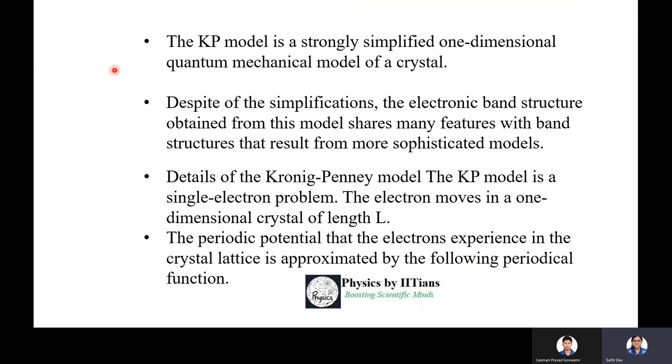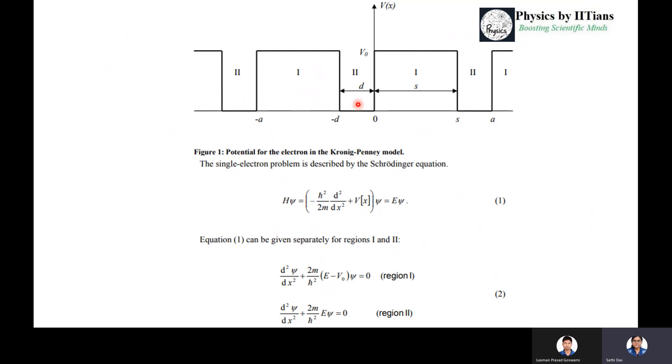So now come to the Kronig-Penney model. What is Kronig-Penney model? It's a strongly simplified one-dimensional quantum mechanical model of a crystal. Despite the simplification, the electronic band structure obtained from this model shares many features with results from many more sophisticated models. So although it is a simple model, it can explain many physical features.